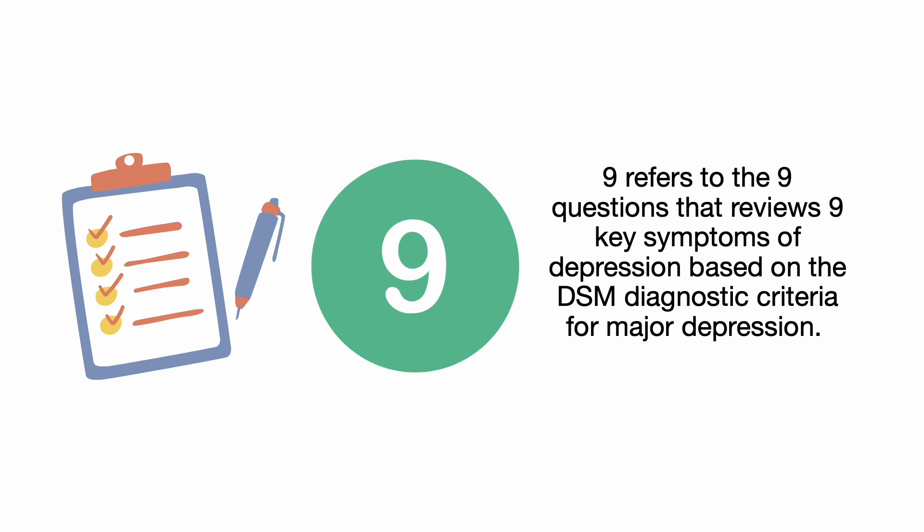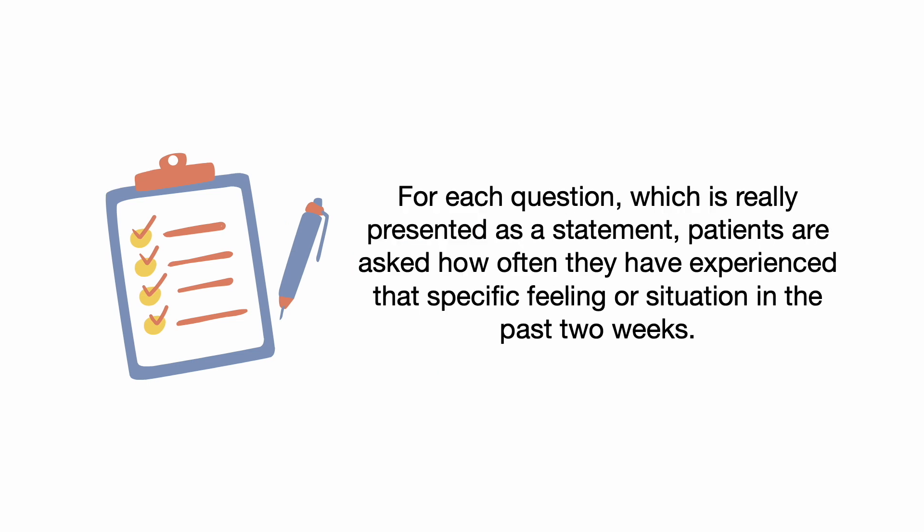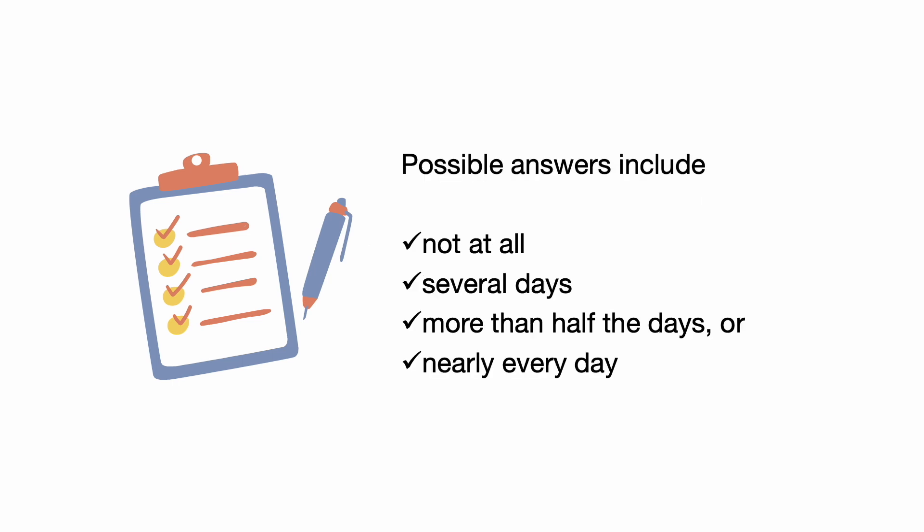In PHQ-9, the 9 refers to the 9 questions that review 9 key symptoms of depression, based on DSM diagnostic criteria for major depression. For each question, which is really presented as a statement, patients are asked how often they have experienced that specific feeling or situation in the past two weeks. Possible answers include not at all, several days, more than half the days, or nearly every day.